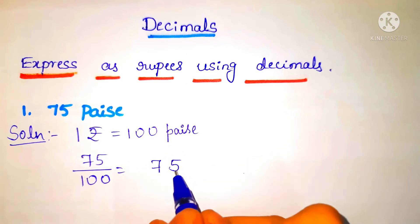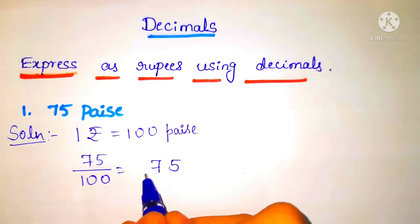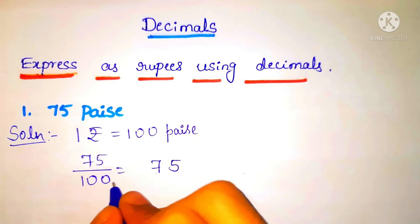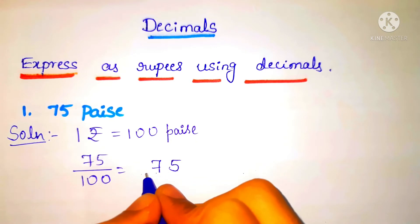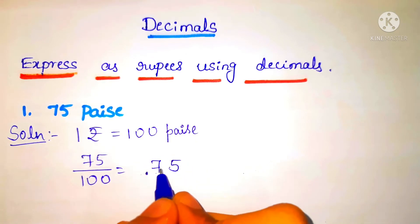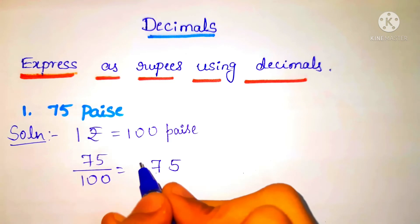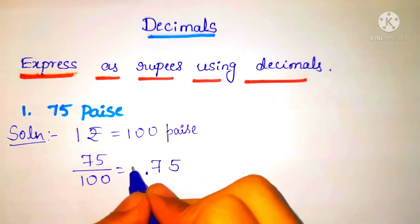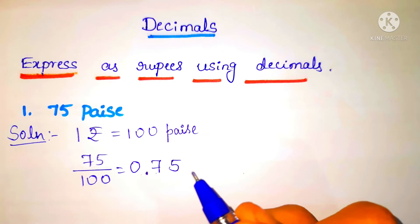After counting one, two, we have to put a decimal point. Since there are two zeros, we count one, two and put the point here. There should be a digit before the point, so we will put zero.